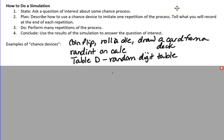In the second part of section 5.1, we talk about how to do a simulation. The four-step process is first to ask a question of interest about the chance process you are investigating.